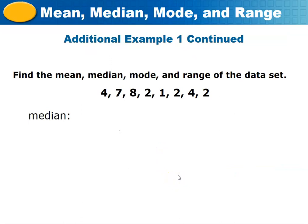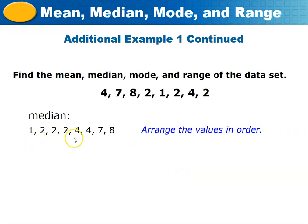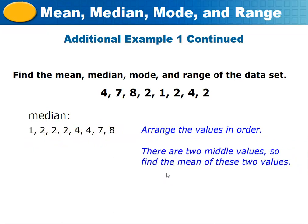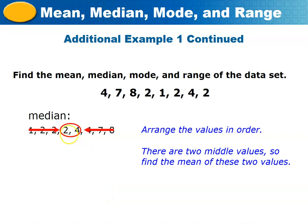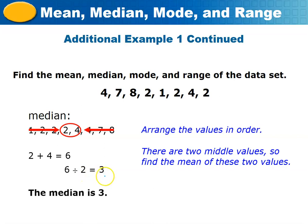To find the median, arrange the values in order: 1, 2, 2, 2, 2, 4, 4, 7, 8. Since there are 8 values (even number), there are two middle values. Counting to positions four and five gives us 2 and 4. Add them and divide by two: (2 + 4) / 2 = 6 / 2 = 3. Therefore the median is 3.